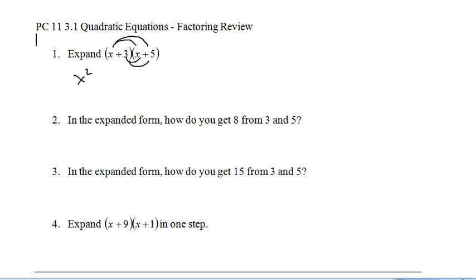So we've got x times x is x squared, x times 5 is 5x, 3 times x is 3x, and 3 times 5 is 15. Collect like terms: x squared plus 8x plus 15. Notice to get the 8 from the 3 and 5 we need to add, and to get the 15 from the 3 and 5 we need to multiply.